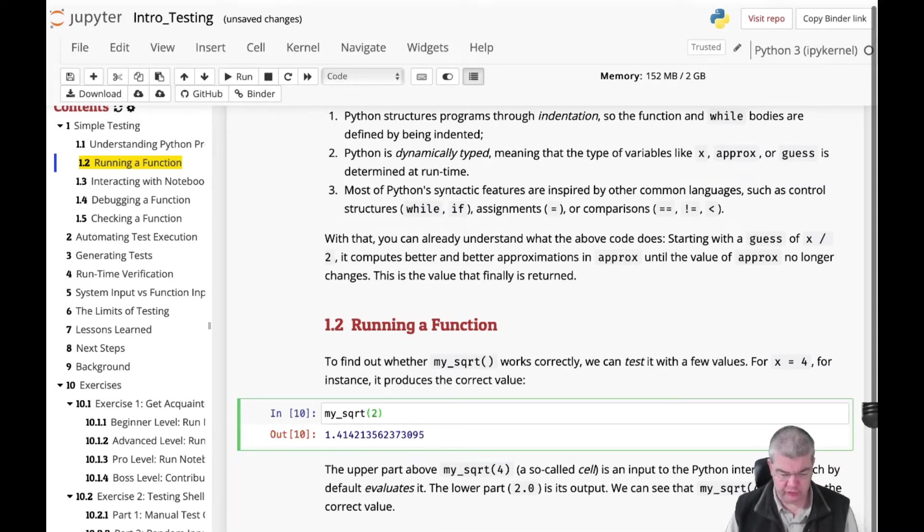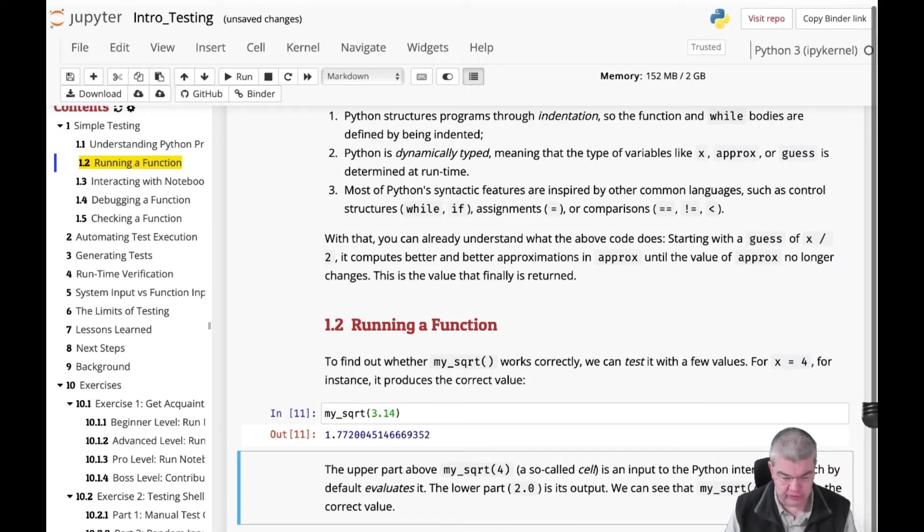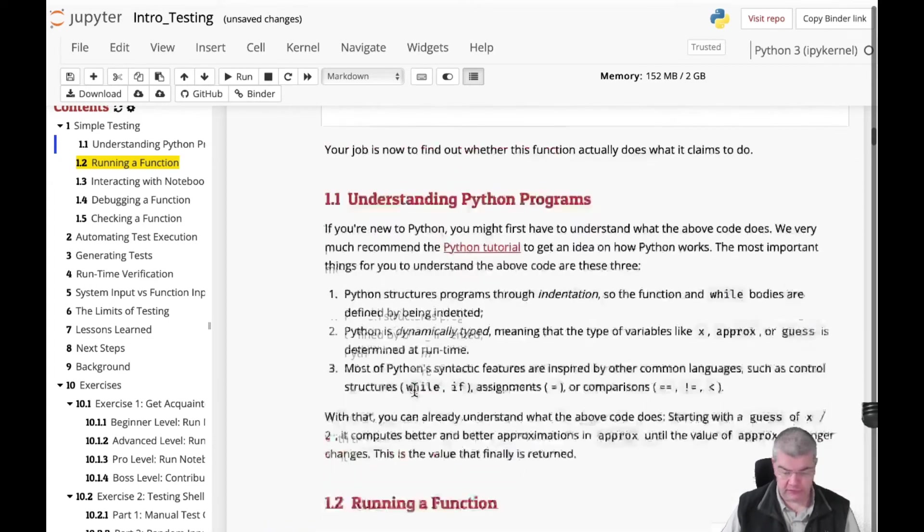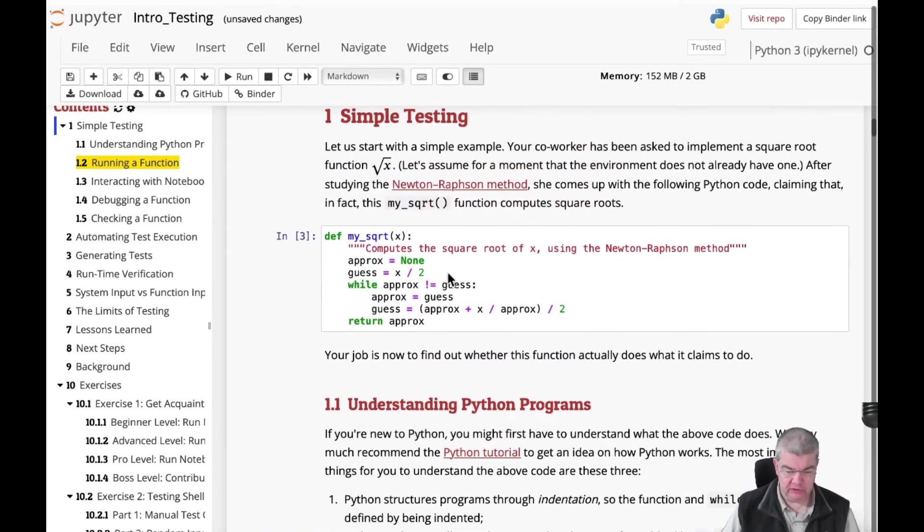We can also compute the my_sqrt(2). Here we go we get 1.0 and we can of course also come up with arbitrary values. I don't know what the square root of pi is but this is of course something that we can compute in here. 3.14 here we go, so we have the square root of pi. This is of course all our function. And we could actually go back to the original version in here and come back with a different implementation.